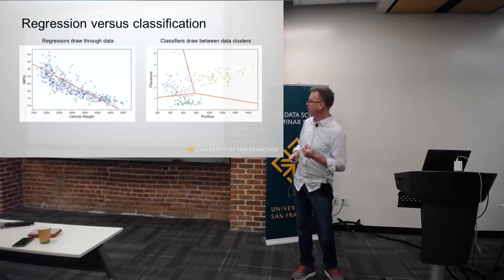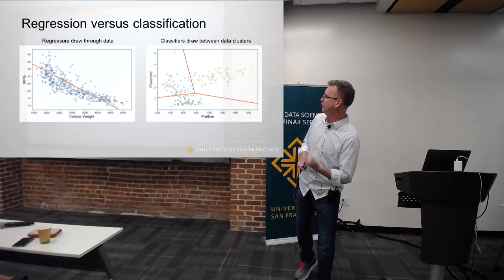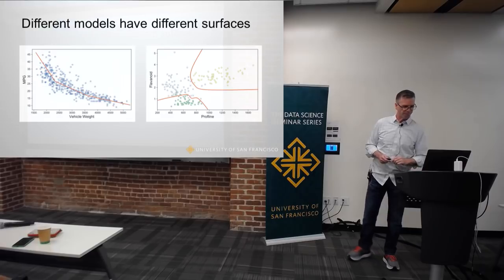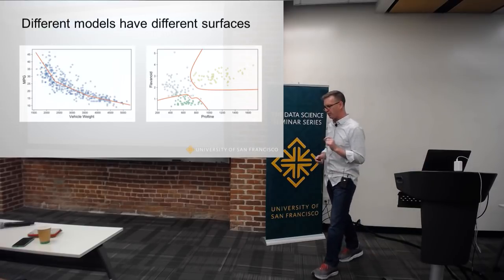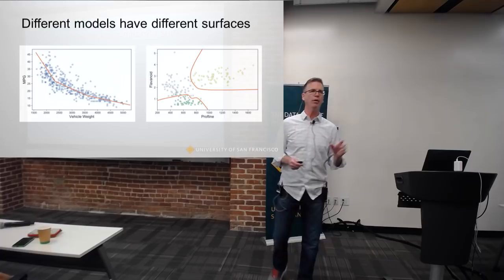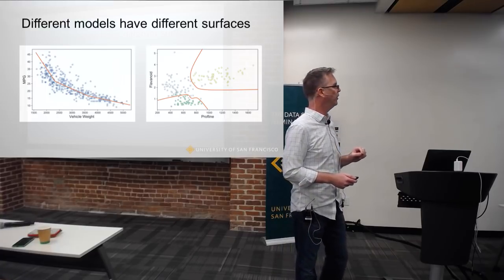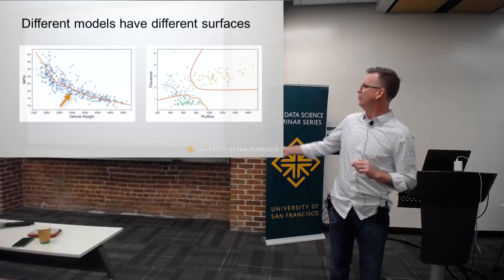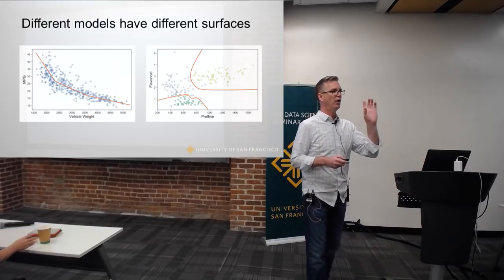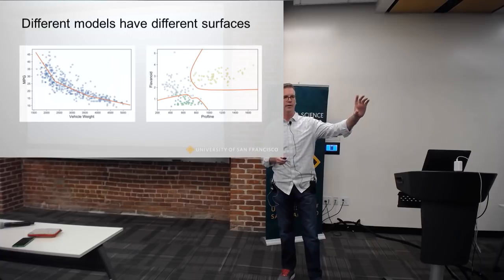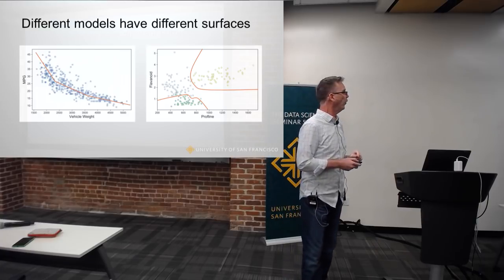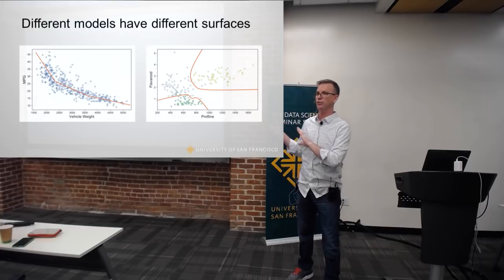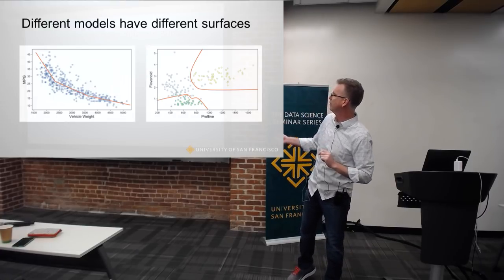For example, here I'm trying to predict miles per gallon from vehicle weight, and I'm going to represent all of that training data with a particular decision surface. The nature of these decision surfaces is dictated by the model I'm using. I can use a piecewise linear approach, predicting a linear approximation within a region, or I can have some really fancy curves that separate my data in a two-dimensional feature space for classification.